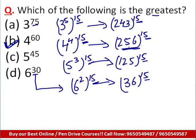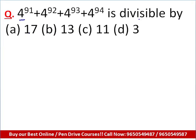Now let's move to a very interesting question. We have: 4 raised to power 91 plus 4 raised to power 92 plus 4 raised to power 93 plus 4 raised to power 94. We have to find out which of the given numbers it is divisible by. The trick is to think of the maximum power that can be taken out as common — and that is 4 raised to power 91, since it is present in all four expressions.